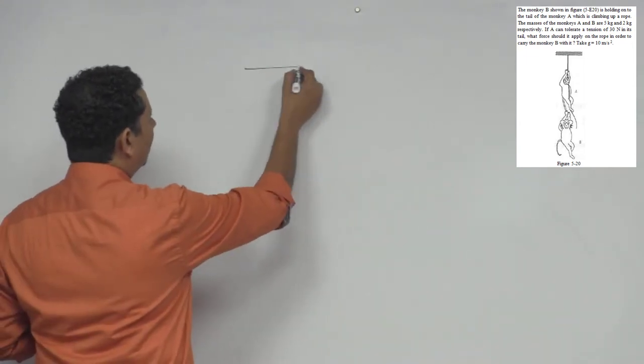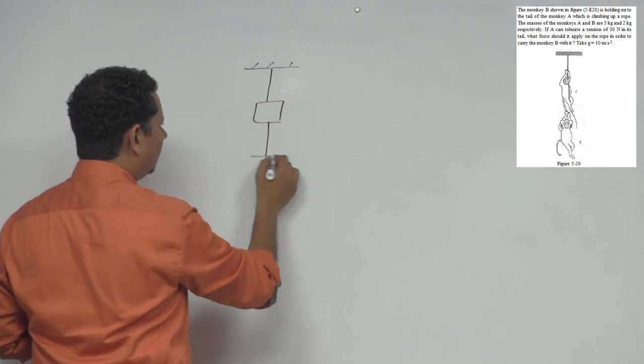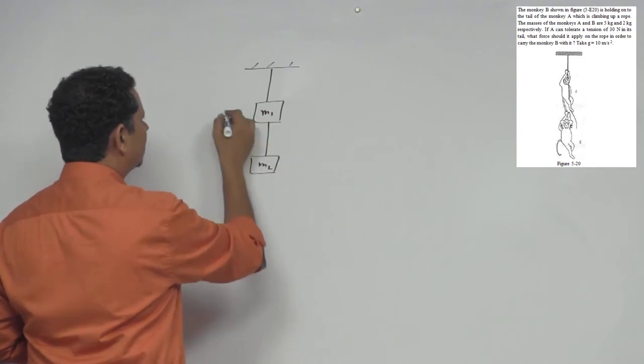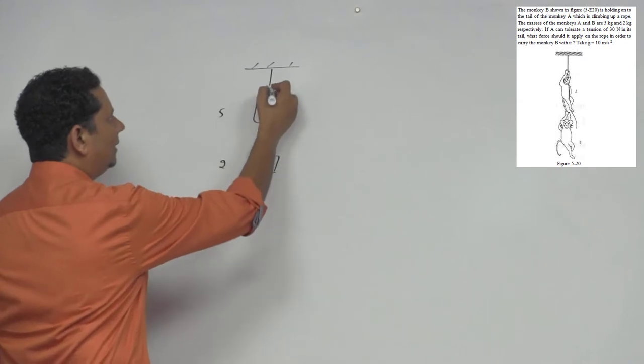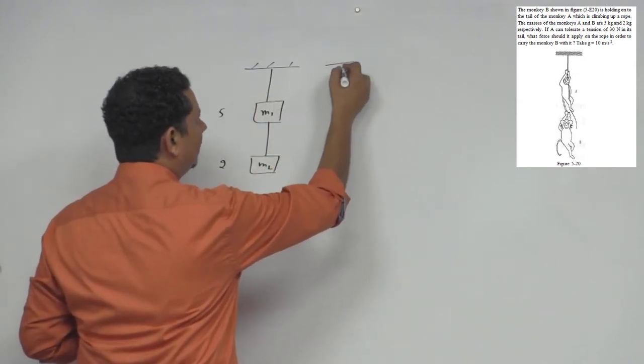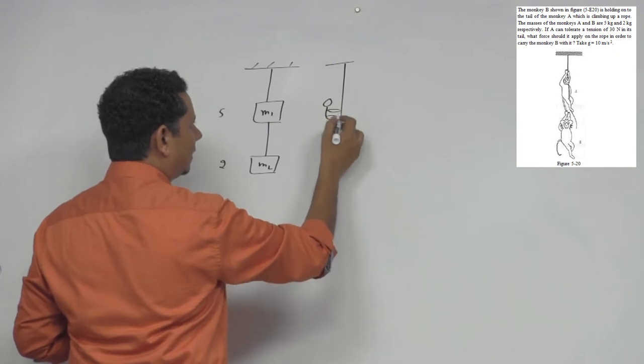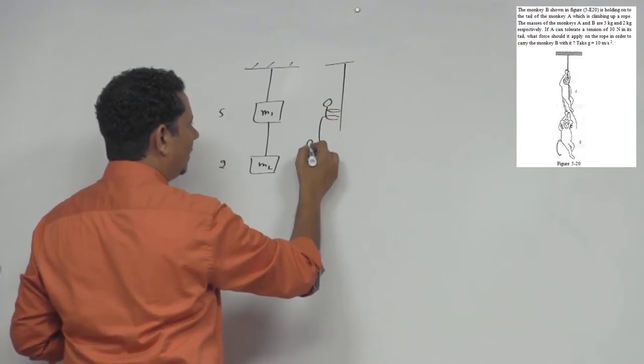Now, is case mein monkey na bana ke karm karate hai, dho block banaate hai. So yeh aapka block, yeh dousra block, thik hai. Iska mass m1, iska mass m2. Iska mass 5 kg diya hoa hai, iska mass aapko 2 kg diya hoa hai. Yahaan pe again scenario yeh hai, ke yeh aapke dho monkey hai, aise aise aise karke chal raha hai. Aur is monkey ki joh tail hai, uske oopar dousra monkey aise latka hoa hai.